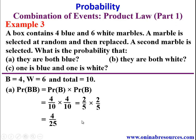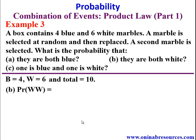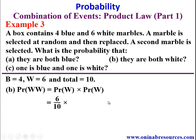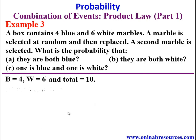For part (b), P(both white) = P(first white) × P(second white) = 6/10 × 6/10. Since the marble is replaced, we still have 6 white marbles. This simplifies to 3/5 × 3/5 = 9/25. That is the end of solution to Example 3b.